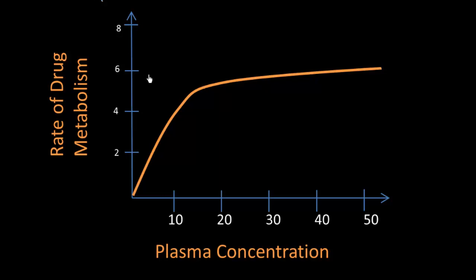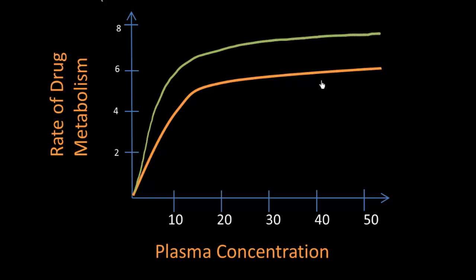With enzyme inducers, when I make more enzymes I'm increasing the rate of drug metabolism. Drawing that on the graph, the way we differentiate enzyme inducers from competitive inhibitors is that the predominant effect is an increase in the maximum rate of metabolism — we call that Vmax, the maximum velocity. So this is the new Vmax. At any plasma concentration of a certain drug, we can see that the rate of metabolism is occurring faster.